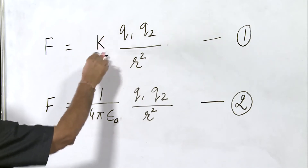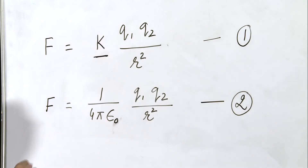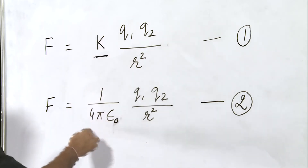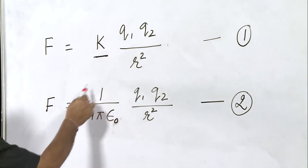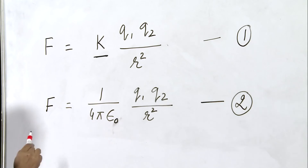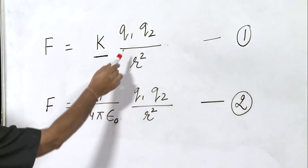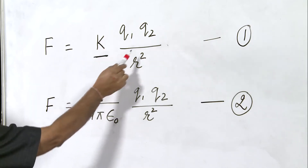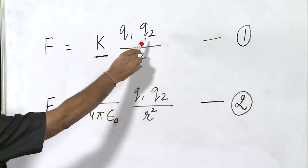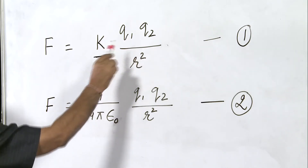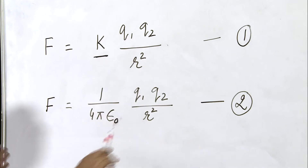Now, this constant k has been found to be equal to 1 upon 4·π·ε₀. Here, ε₀ is the permittivity of free space, as the spacing between these two charges q1 and q2 is free space or vacuum.